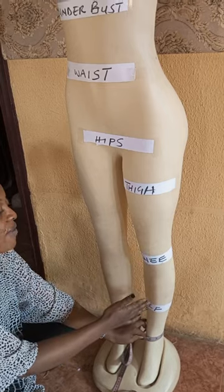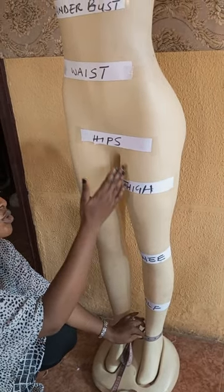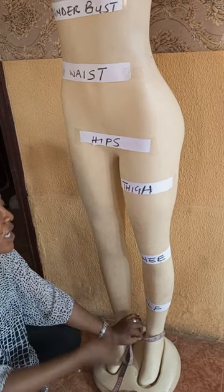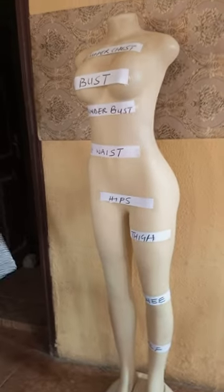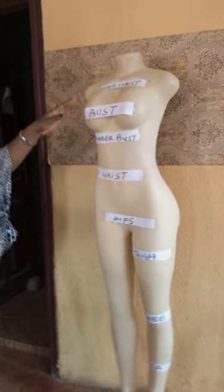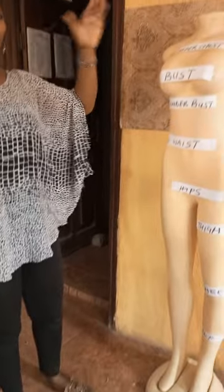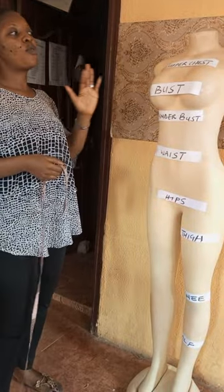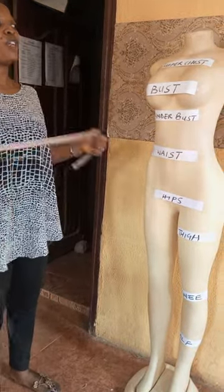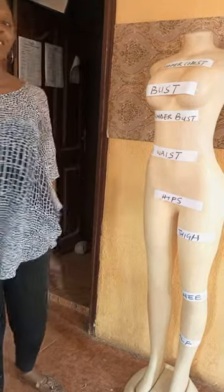All these measurements are very essential. If you want to sew a fitted trouser or a pencil trouser, you must take your thigh, your knee, your calf, and your ankle measurements so that it should be fitted. That is how far we can go on today's lecture. On our next video, we are going to make our vertical measurements. Please subscribe and like our page so that when we upload it, you will be the first to be notified. Thank you so much for watching. See you next time. Bye.